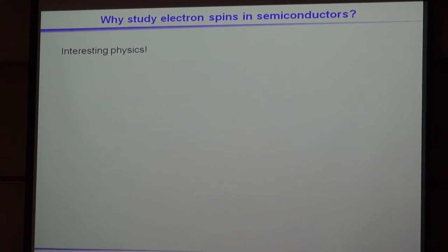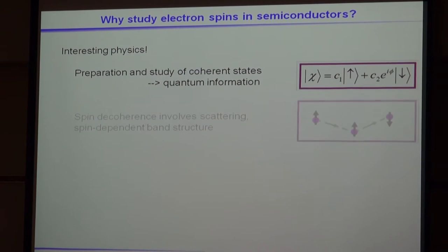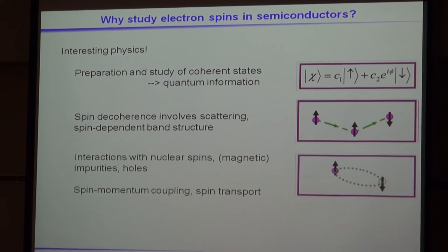I'm a physicist by training. I like the interesting physics. We're talking about the preparation and study of coherent states, so it has natural implications and relationship with quantum information. The spin physics in semiconductors is really fascinating. It involves scattering and spin-dependent band structure, and is only something we have been able to probe relatively recently with spin-dependent measurement techniques. The spins in materials also interact with nuclear spins, as well as impurities, magnetic impurities, and holes.